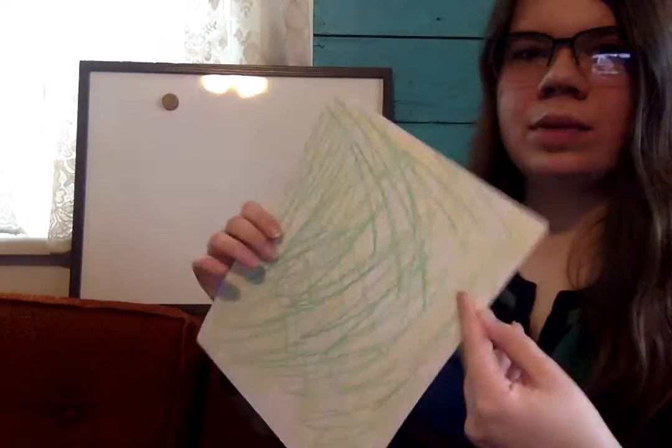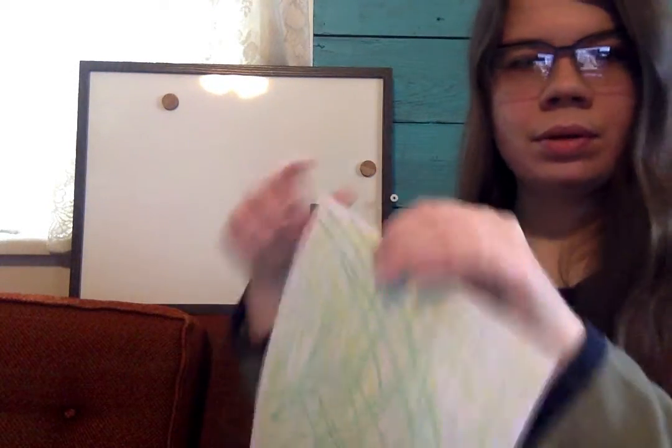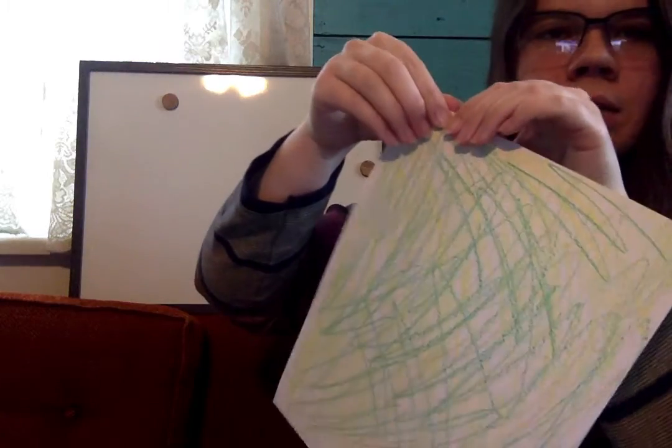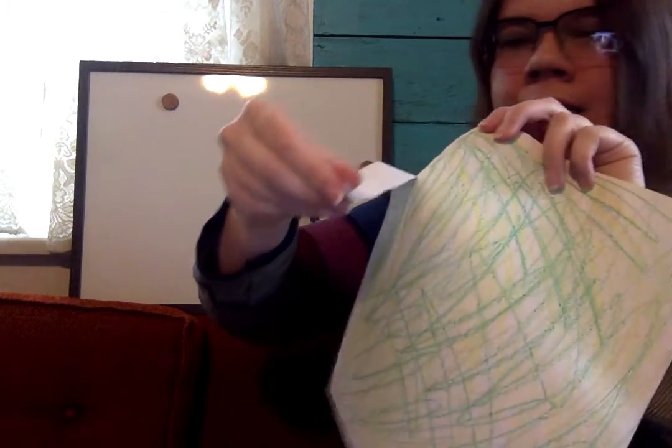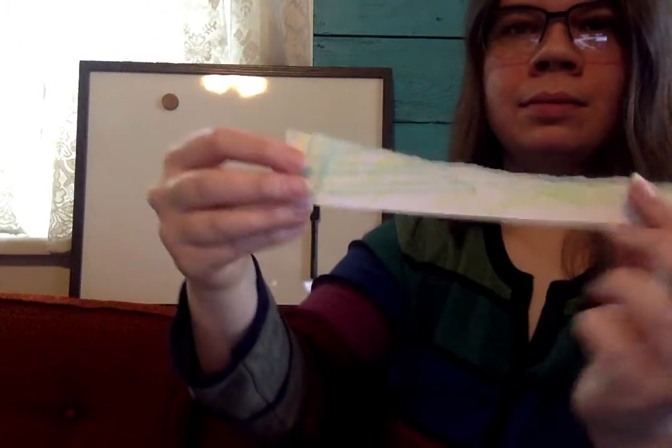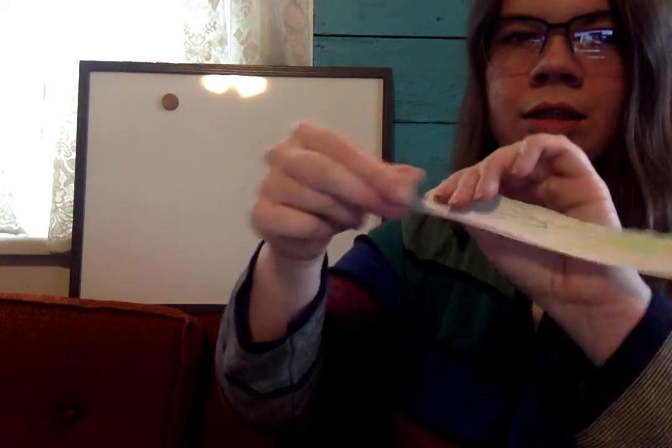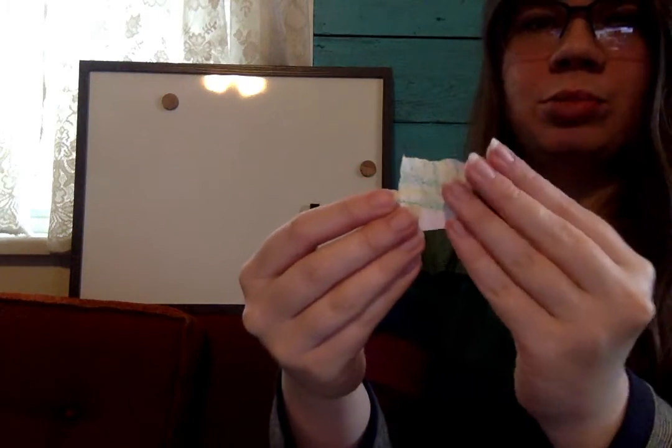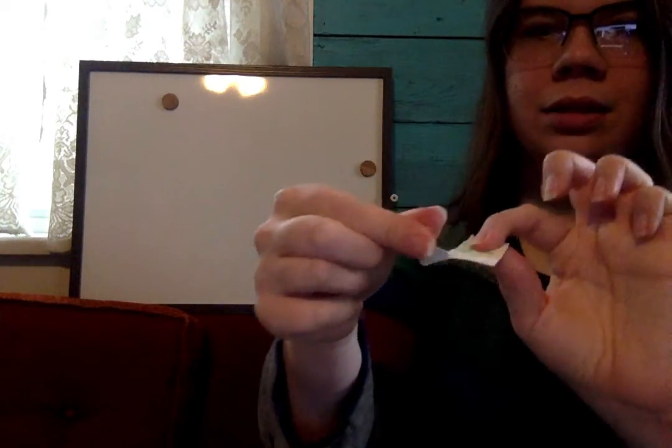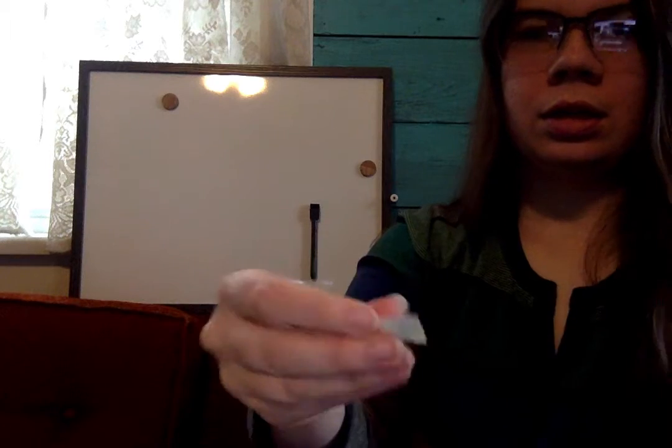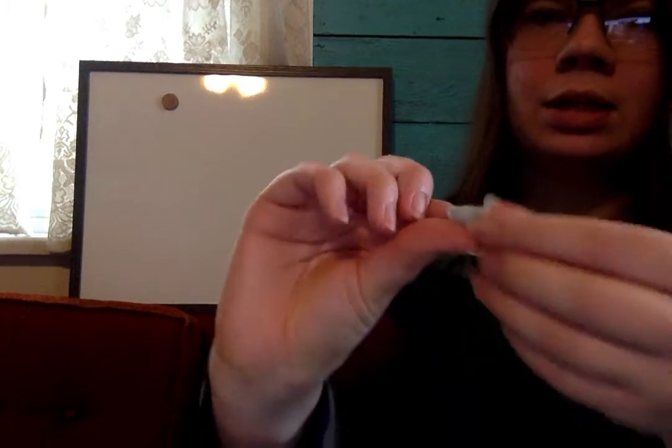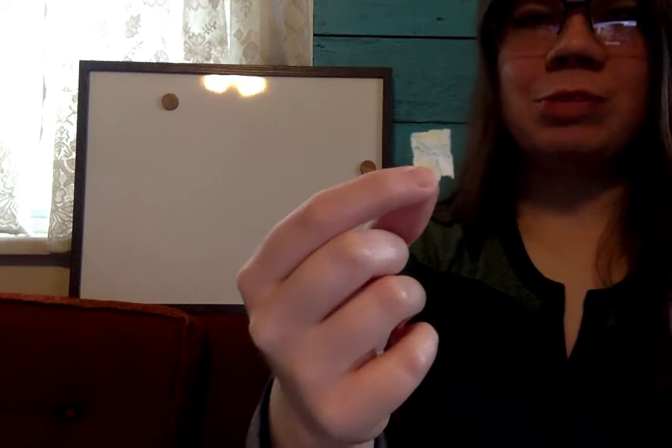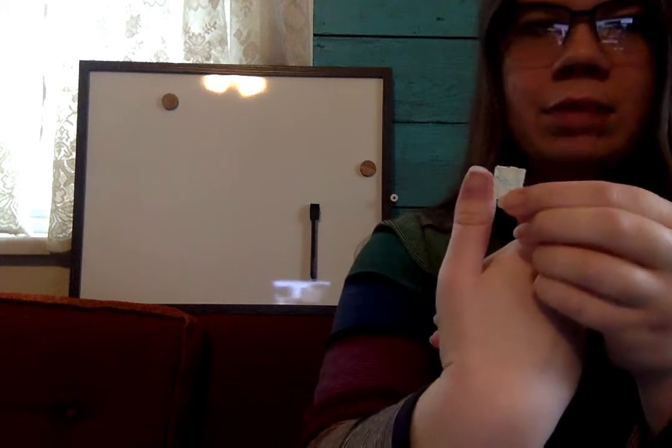So now what we're going to do with this is we're going to rip it up. Now watch. The easy way to do this I think is to rip off strips and then rip off little pieces. Now this piece is still too big. You want it to be maybe, whoops, I dropped it. Maybe this big would be a pretty good size. Maybe the size of your thumbnail.